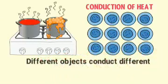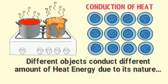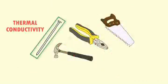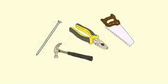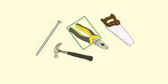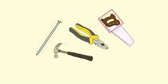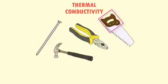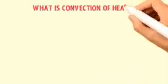Remember that different objects conduct different amounts of heat energy depending on the nature of the material they are made of. For example, this object is made of iron, so its thermal conductivity is large. While the handle of this object is made of plastic or wood — plastic and wood are insulators — so their thermal conductivity or heat conduction would be minimum.